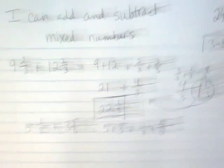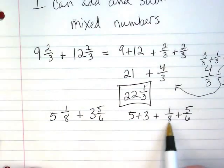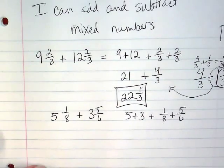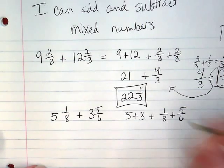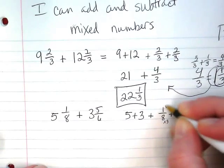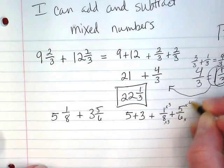The problem here is that we don't have like denominators. We have an 8 for a denominator here and a 6 for a denominator here. So we want to think of a common denominator so we can convert those. I'm thinking 24, so this is going to be multiplied by 3 over 3, and this is going to be multiplied by 4 over 4.